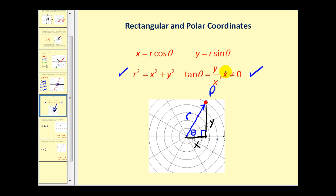Taking the sine of angle theta gives y over r, so solving for y: y = r sin θ. Taking the cosine of angle theta gives x over r, so x = r cos θ. These formulas are very helpful when converting back and forth between rectangular and polar coordinates.